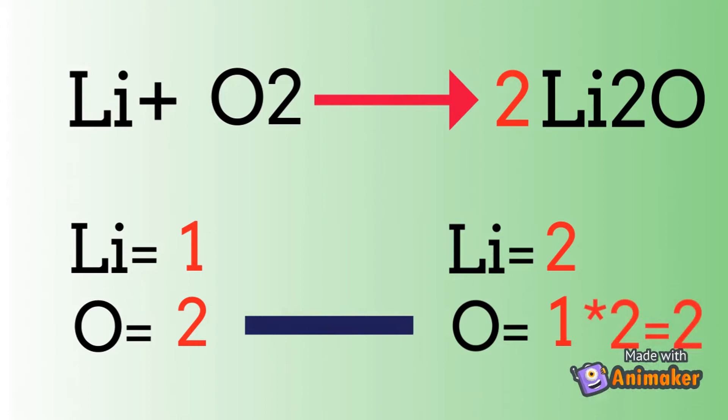We need to update lithium in product side. Because this 2 applies to the whole compound here. So we have 2 times 2 that equals 4. We have 4 lithium in here and 1 lithium in left side.